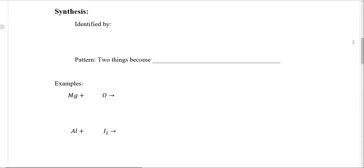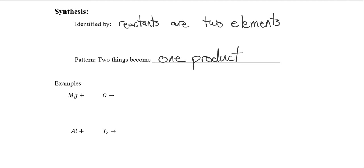So let's check a synthesis. How do you know whether something's a synthesis or not? You can identify whether a reaction is a synthesis because the reactants are two elements, and the pattern that synthesis reactions follow is that the two things or your two elements will become one product.